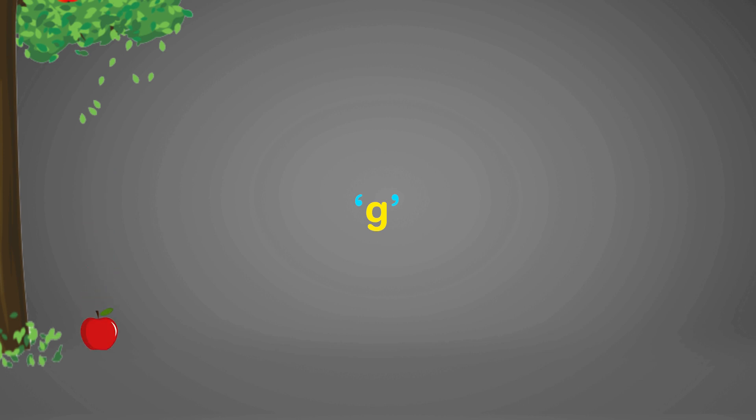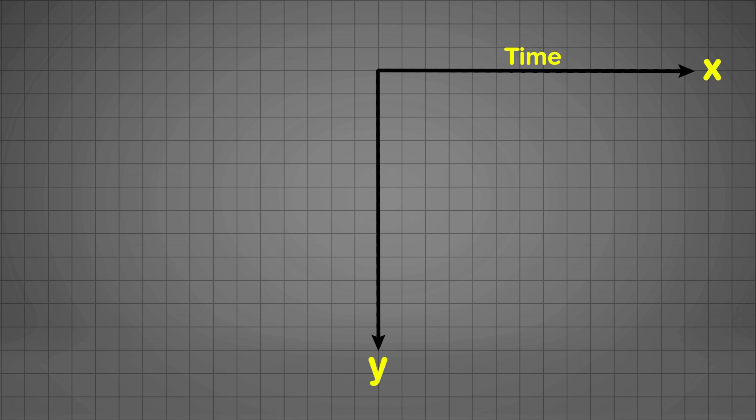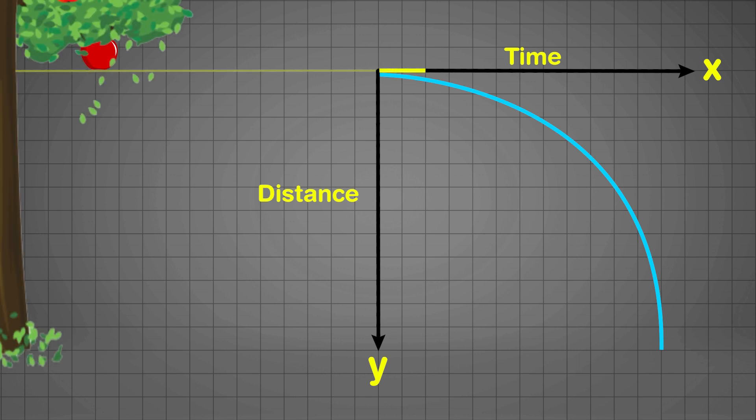An apple falling downward picks up speed because it accelerates due to gravity. Let's show it graphically. The x-axis shows time and the y-axis shows the distance from top to bottom. The time versus distance curve looks like this. The curve is almost flat when the apple detaches from the tree, and the curve drops down quickly as the apple approaches the ground.